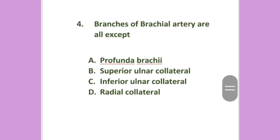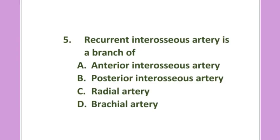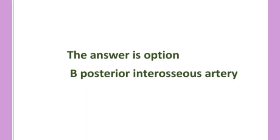Branches of brachial artery are all except: profunda brachii, superior ulnar collateral, inferior ulnar collateral, or radial collateral. The answer is option D: radial collateral artery. Recurrent interosseous artery is a branch of: anterior interosseous artery, posterior interosseous artery, radial artery, or brachial artery.